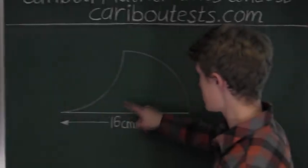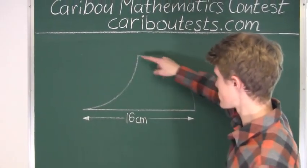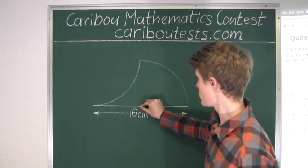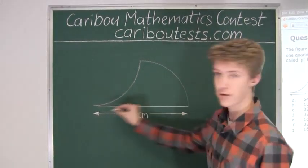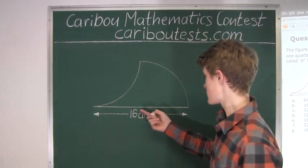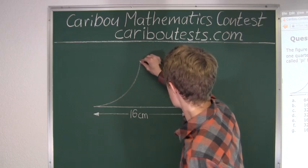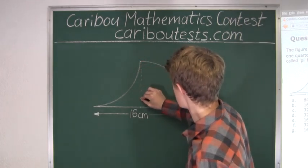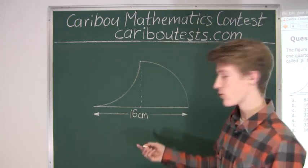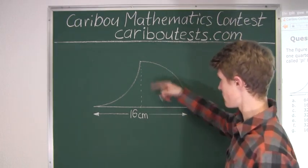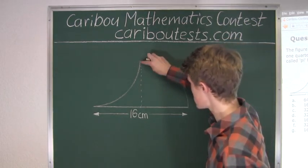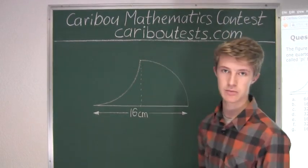Therefore, for this quarter circle, we can see that around here would be the midpoint of this line. So if it's the midpoint of this line, we know that this must be 8 cm. And therefore, we know that the radius of this quarter circle is 8 cm, and that also tells us that this must be 8 cm too.